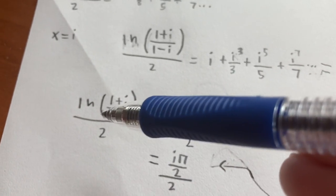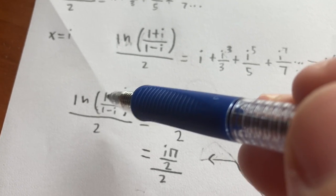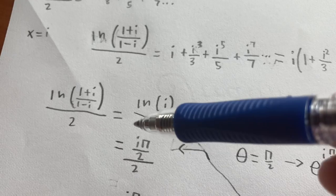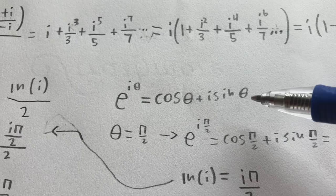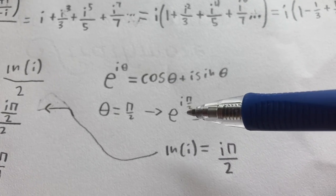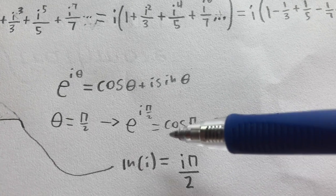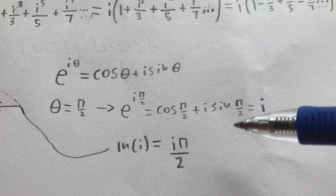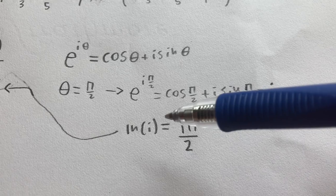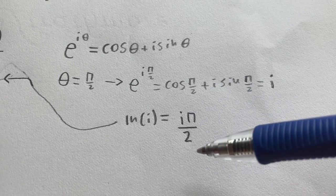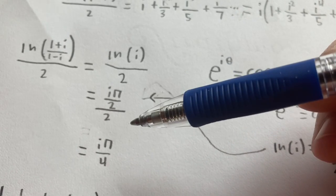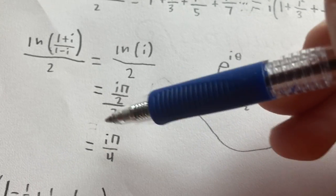Now on the other hand, we can calculate this directly. Note that 1 plus i divided by 1 minus i is just equal to i. So this is just equivalent to the natural log of i divided by 2. Now using Euler's formula, which is e to the i theta is equal to cosine theta plus i times sine theta, and plugging in the value pi divided by 2 for theta, we see that e to the power of i times pi divided by 2 is equal to cosine of pi divided by 2 plus i times sine of pi divided by 2. This is clearly equal to i. So therefore, e to the power of i times pi over 2 is equal to i. So by the definition of the natural log, the natural log of i is equal to i times pi divided by 2. So we can substitute this into our equation to get that the natural log of i divided by 2 is equal to i times pi divided by 2 divided by 2, which is clearly just i times pi divided by 4.